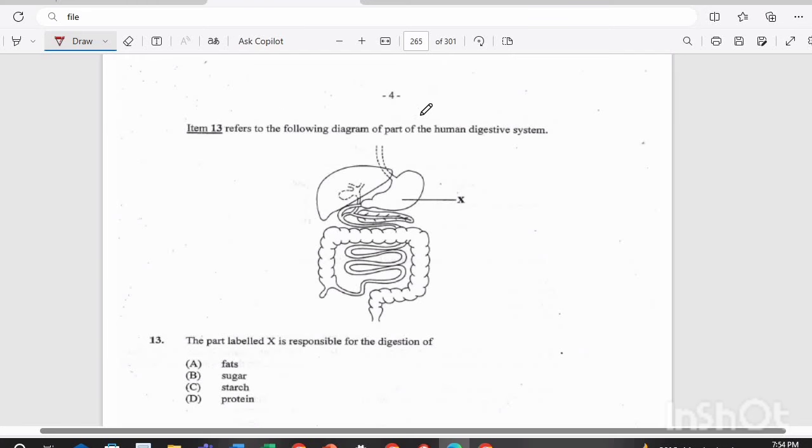Item 13 refers to the following diagram of part of the human digestive system. The part labeled X is responsible for the digestion of, is it A, fats, B, sugar, C, starch, or D, protein? If you answered protein, you are correct, D.